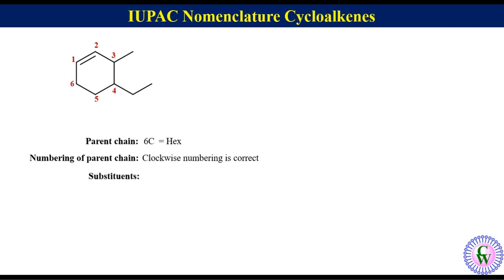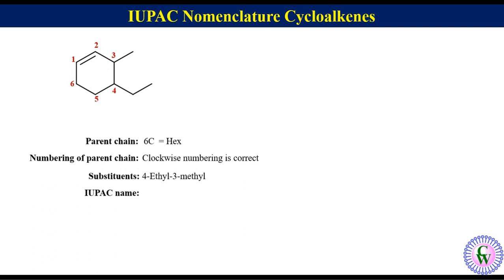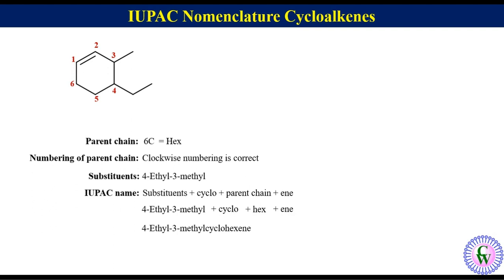There are 2 substituents: an ethyl at C4 and a methyl at C3, so the substituents will be written as 4-ethyl-3-methyl. Merging these: 4-ethyl-3-methyl + cyclo + hex + ene. So the IUPAC name will be 4-ethyl-3-methylcyclohexene.